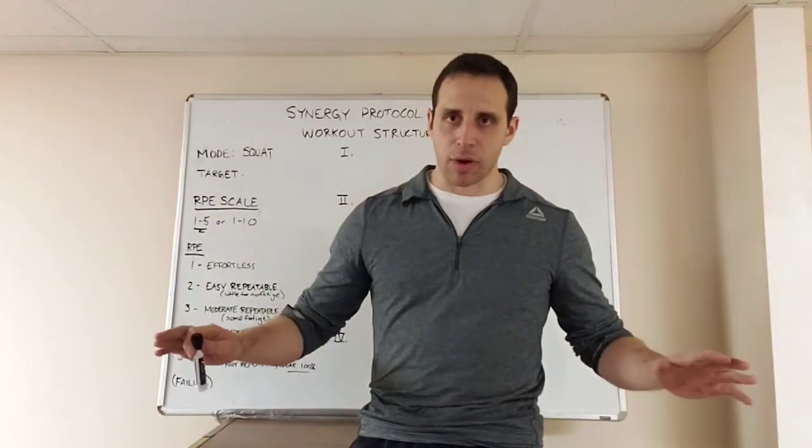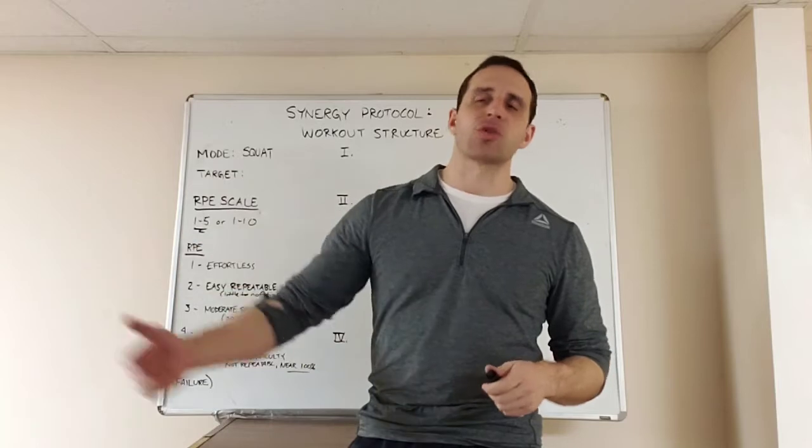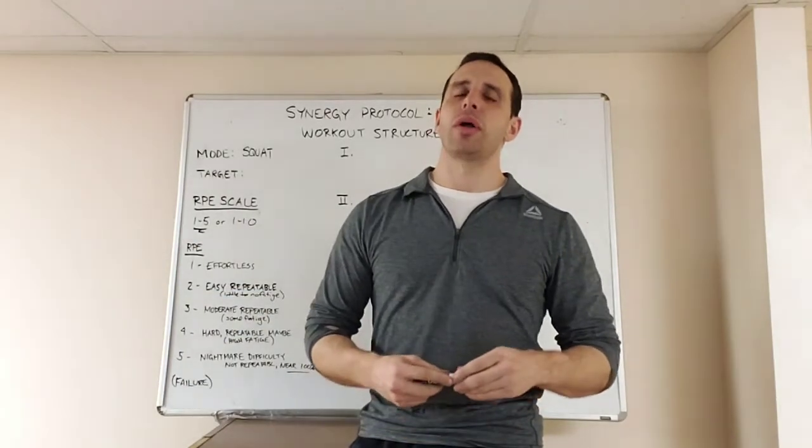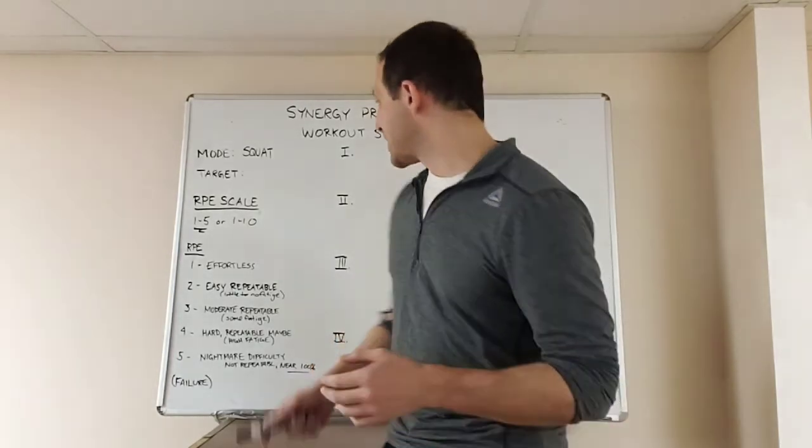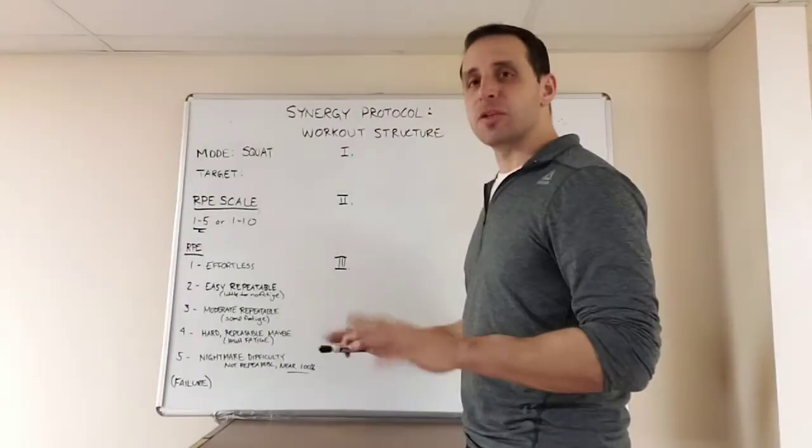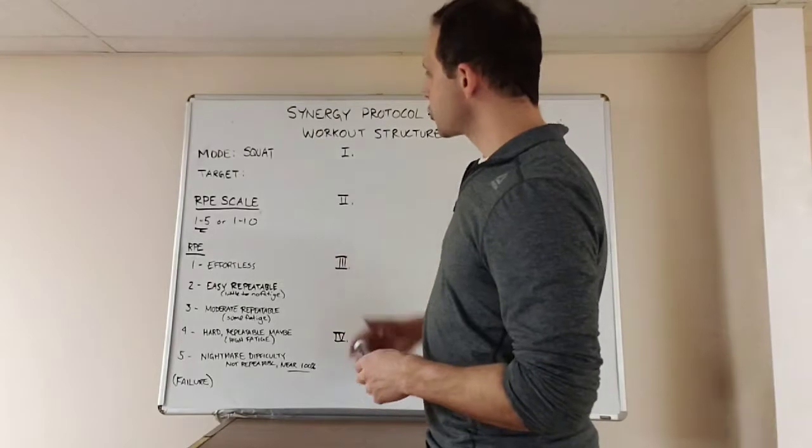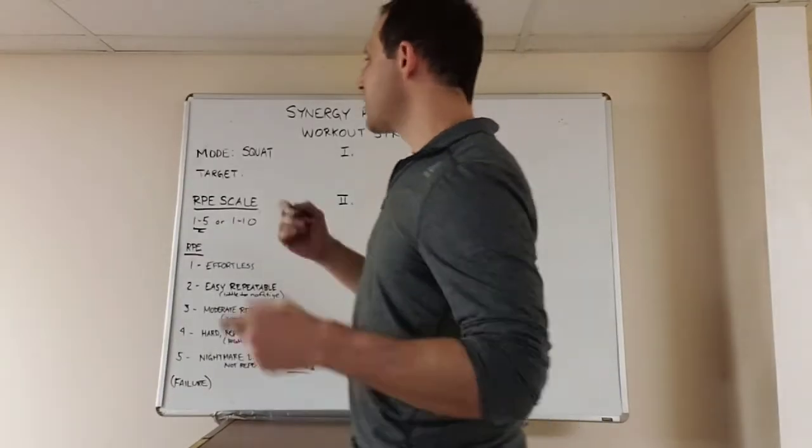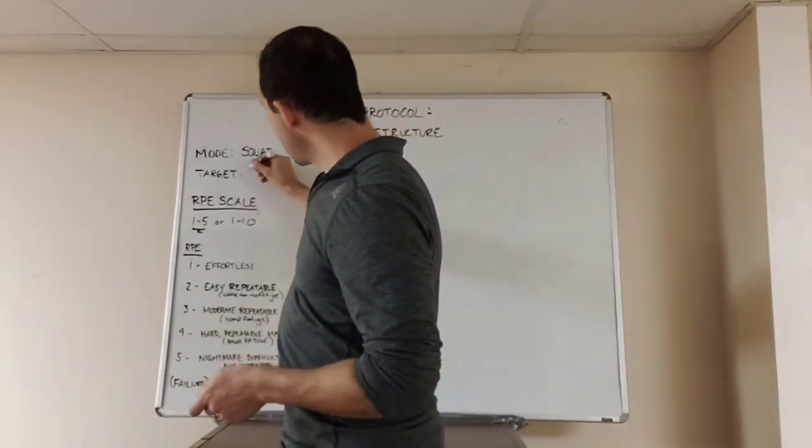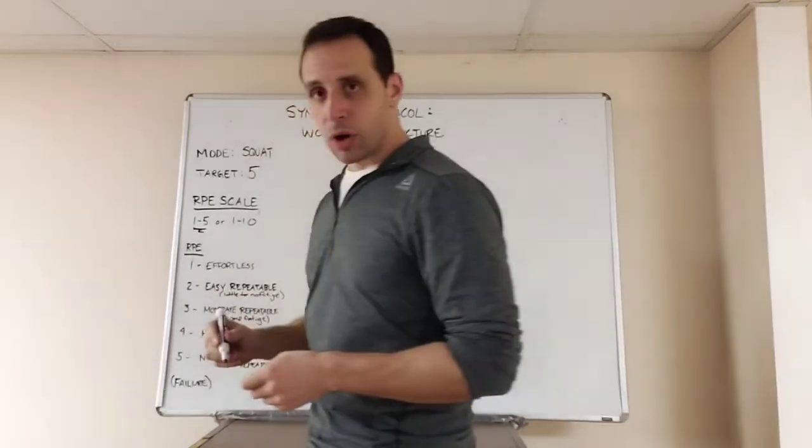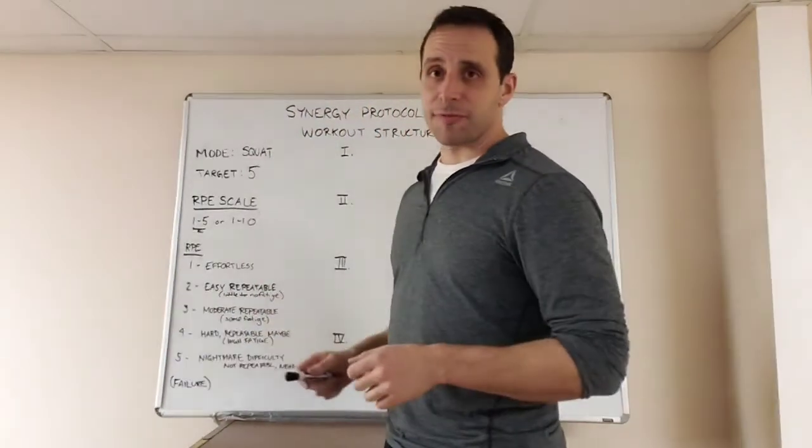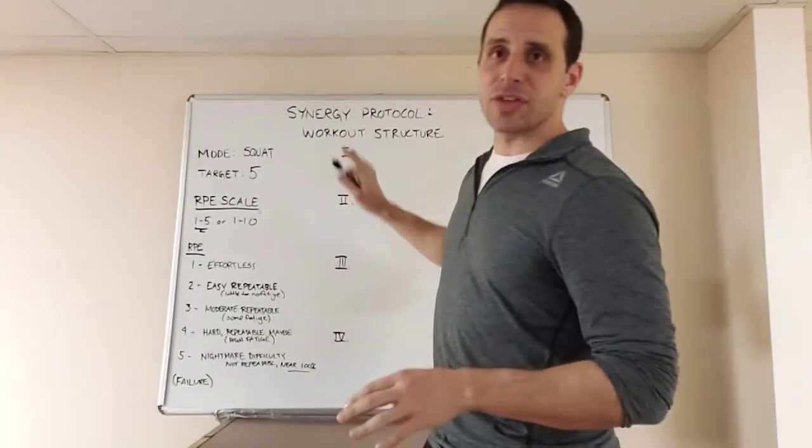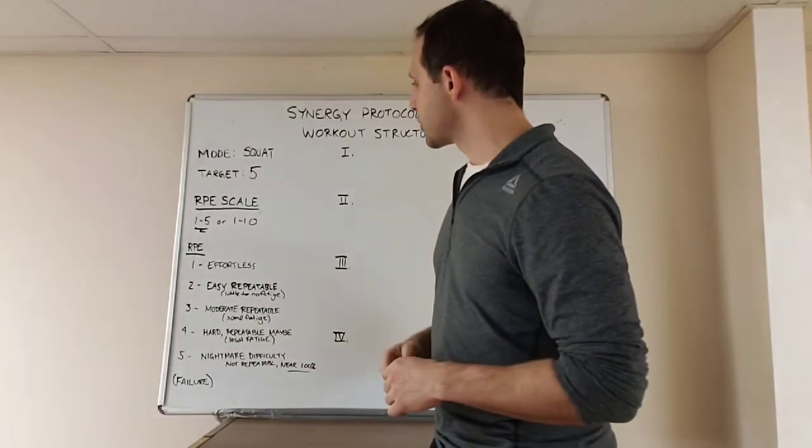So when you lay out your program, when you're planning out weeks in advance what you're going to be doing, you're going to know each workout has a target repetition scheme to achieve for several of these phases. The last phase plays by its own rules, but the first three, the target repetition scheme in this instance we're going to use is five. And if you were starting the synergy training protocol, the first workouts you'd be doing would be with a target repetition scheme of five.